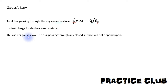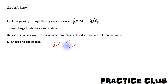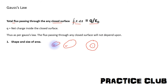As per Gauss's Law, the flux passing through any closed surface will not depend upon the shape and size of the area. The electric flux will not depend upon the shape and size of the closed surface. Both surfaces enclosing the same charge will give the same flux, because the enclosed charge is the same.